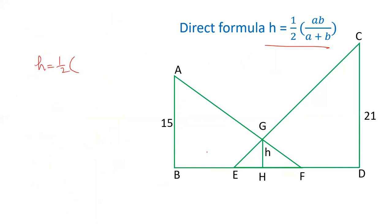So the direct formula is half AB times CD upon AB plus CD. So H equals one-half, where A and B are the parallel line values. The product of these numbers divided by their sum. 15 into 21, and 15 plus 21 is 36. Cancel out to get H equals 35 over 8, which is 4.375.